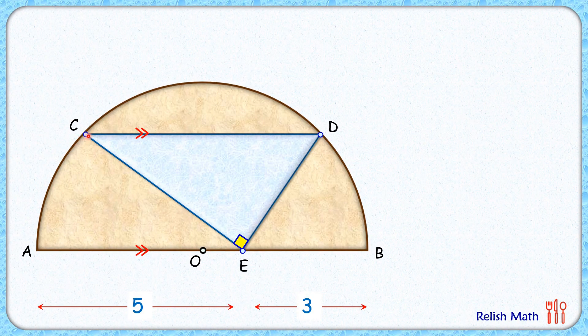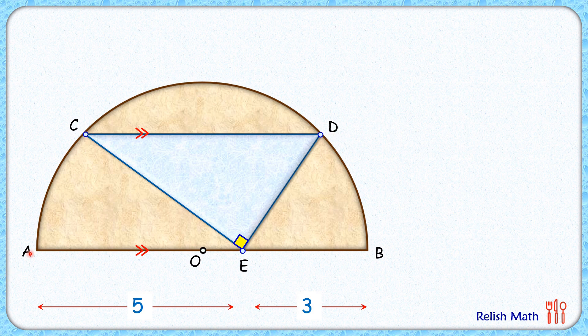We will start by using the fact that CD is given parallel to AB and the distance between the parallel lines is the same. So the vertical distance of C from AB and D from AB will be equal. So if this CG is h centimeter, DF will also be h centimeter.